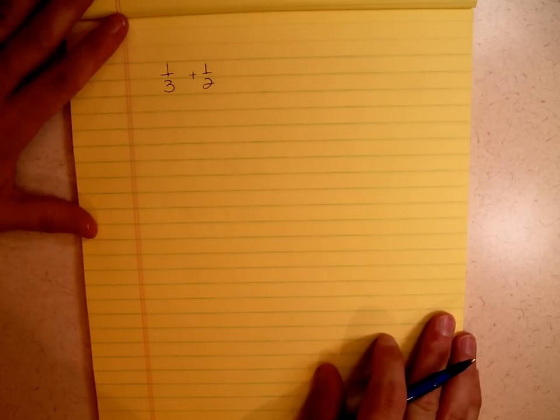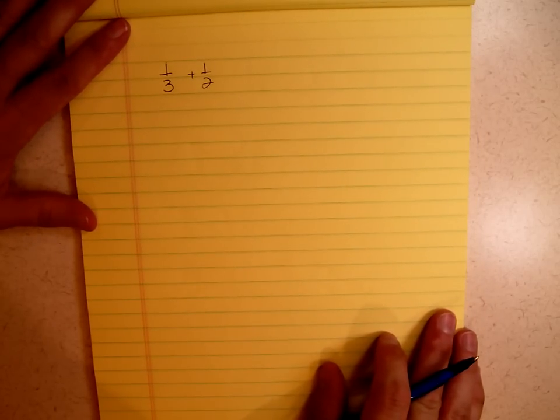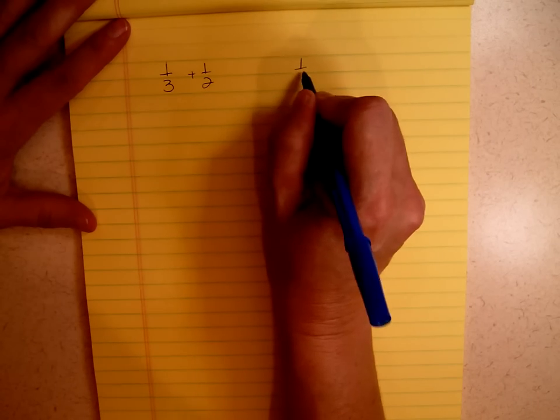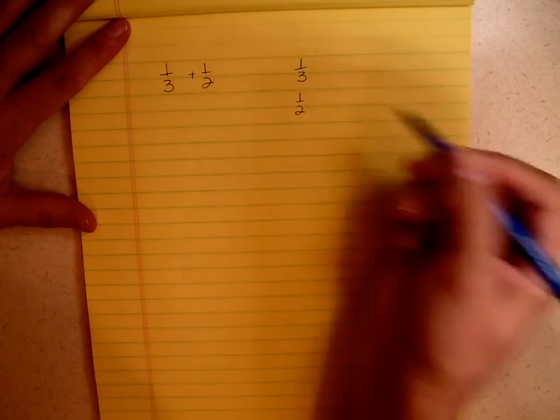If we're adding fractions with unlike denominators, one-third plus one-half, the first thing you need to do is find the common denominator. And the way that I've always done it is I've always written it this way. I found it easier.